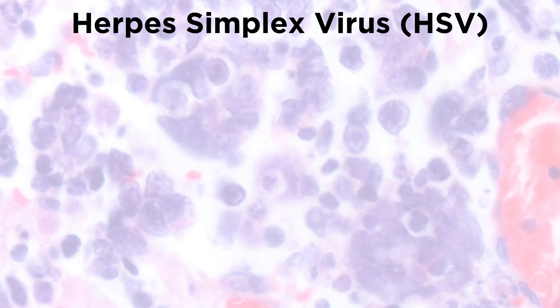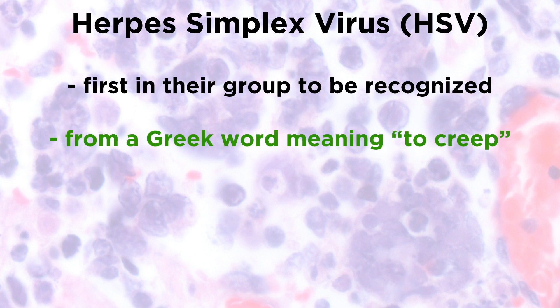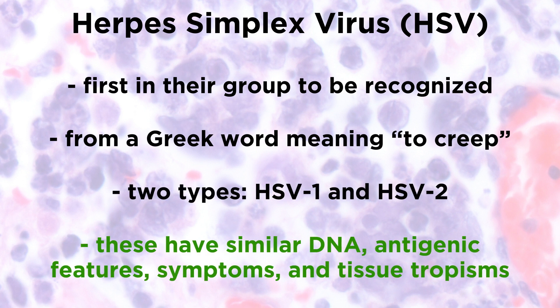Herpes simplex viruses, or HSV, were the first in their group to be recognized. The name herpes comes from a Greek word meaning to creep. There are two types: HSV1 and HSV2. They share very similar characteristics, like DNA homology, antigenic features, symptoms, and tissue tropisms. However, there are some subtle but significant differences that set them apart.